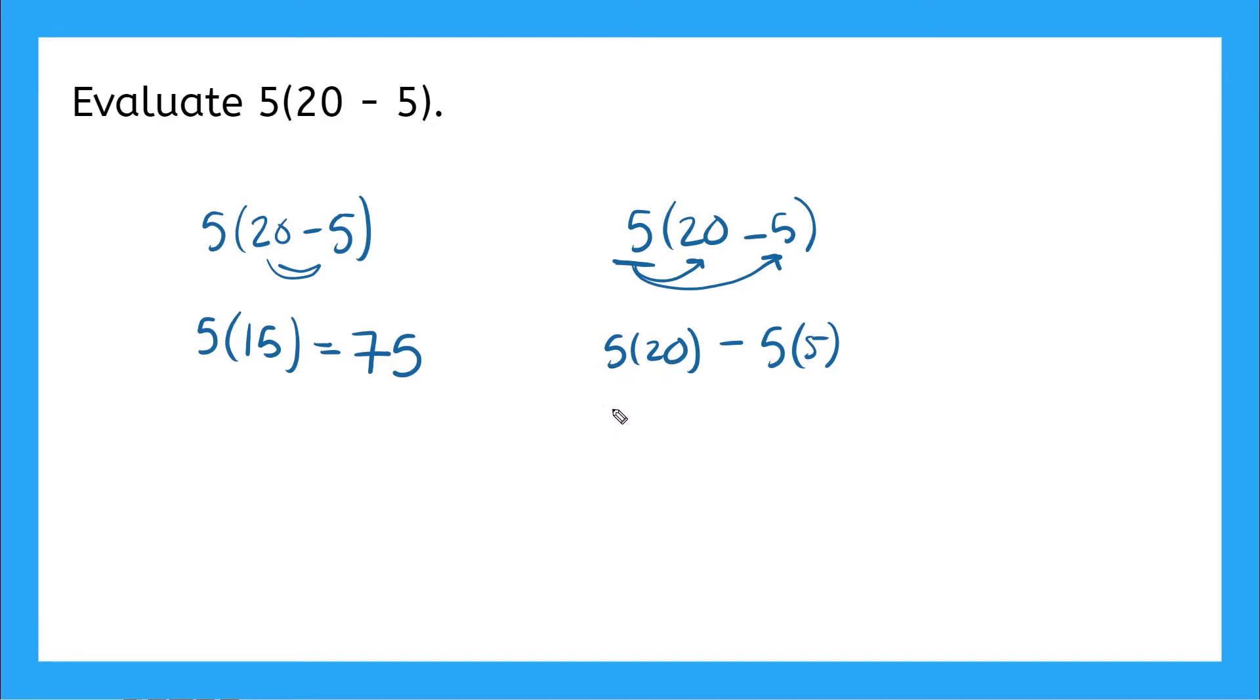If I do my multiplication 5 times 20, that gives me 100 minus 5 times 5. That gives me 25. And now if I do my subtraction, I will get 75. Perfect. Our answers here are matching.